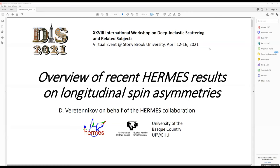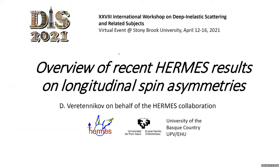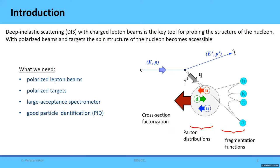Good morning or good afternoon, everyone. I would like to give an overview of various HERMES results. In this talk I will focus on spin-dependent inclusive deep inelastic scattering, which gives us information on both PDFs and fragmentation functions. To do such a measurement we need a polarized lepton beam, polarized target — ideally 100% polarized — large acceptance spectrometer, and very good particle identification.